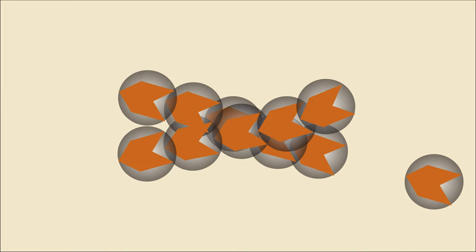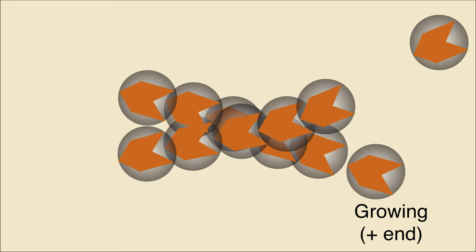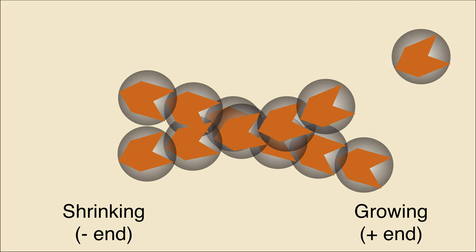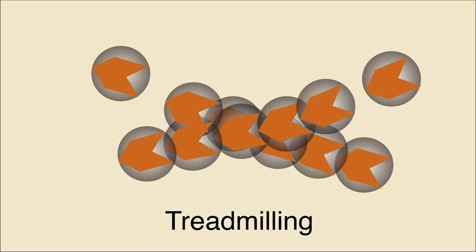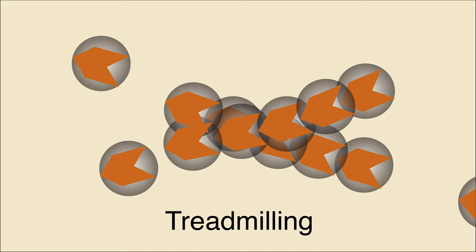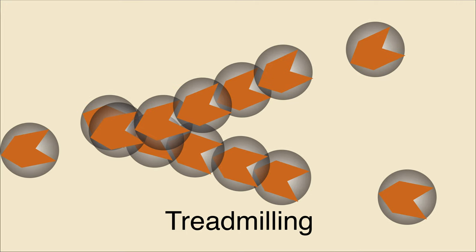Microfilaments are dynamic polymers continually growing from the plus end and shrinking from the minus end. Often, actin assembly and disassembly occur at the same rate. This is called treadmilling because there is no net change in the length of the filament, but monomers slowly process through the filament from the plus end to the minus end.